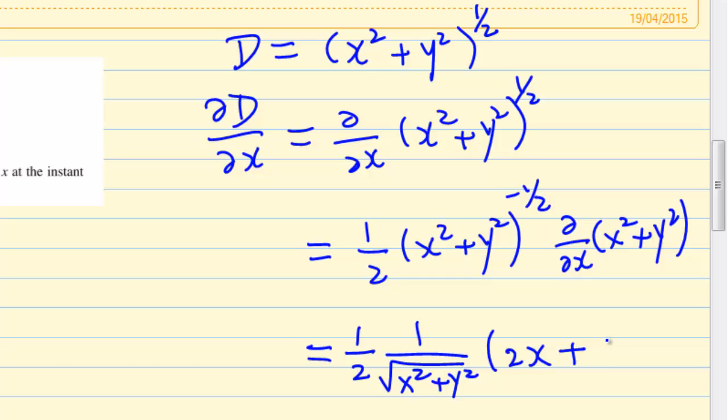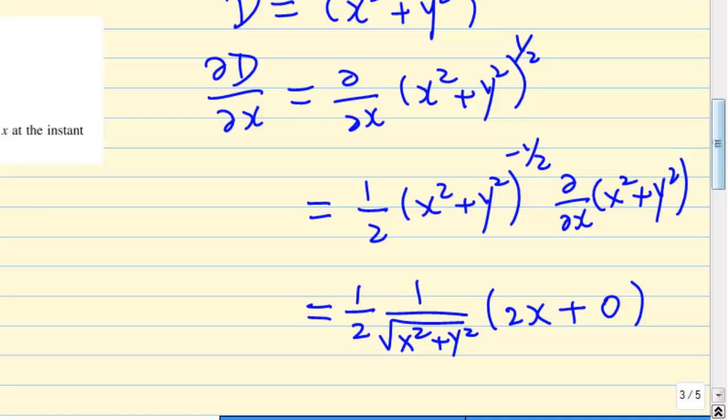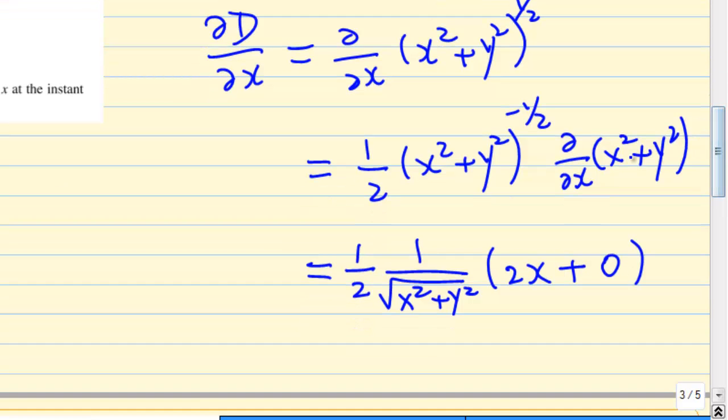Since y is held constant, so after simplifying, you get x over square root of x square plus y square.